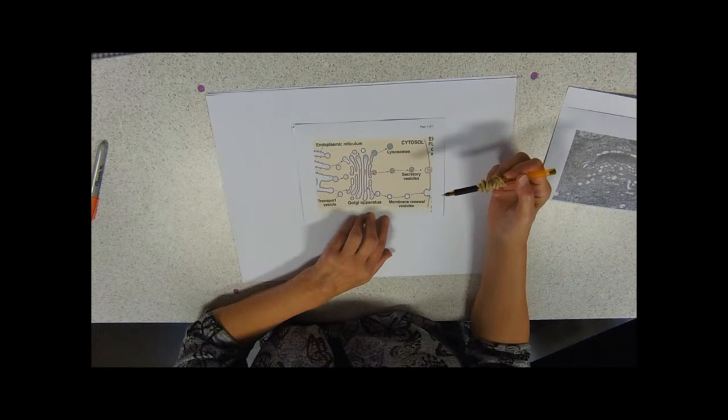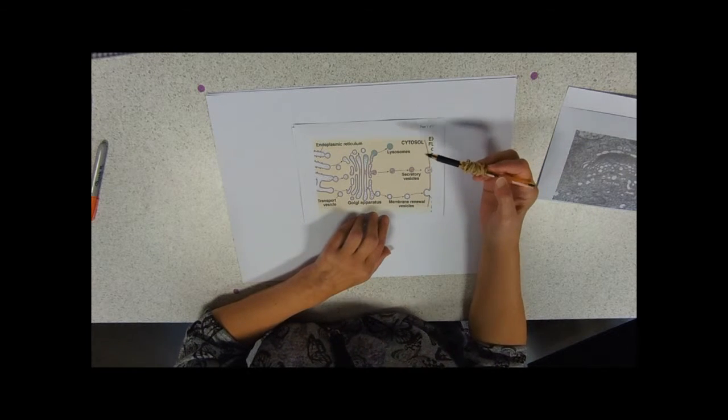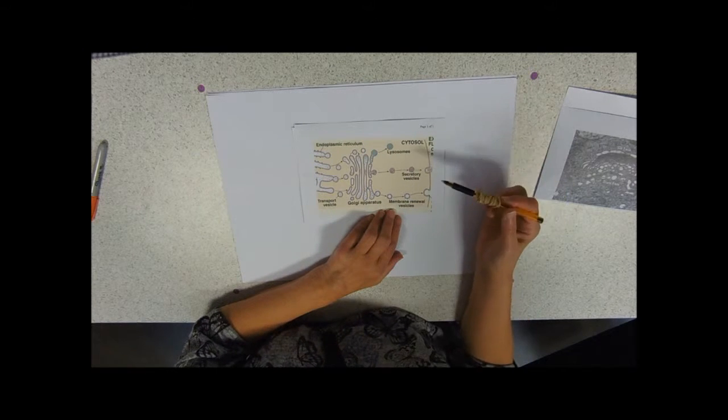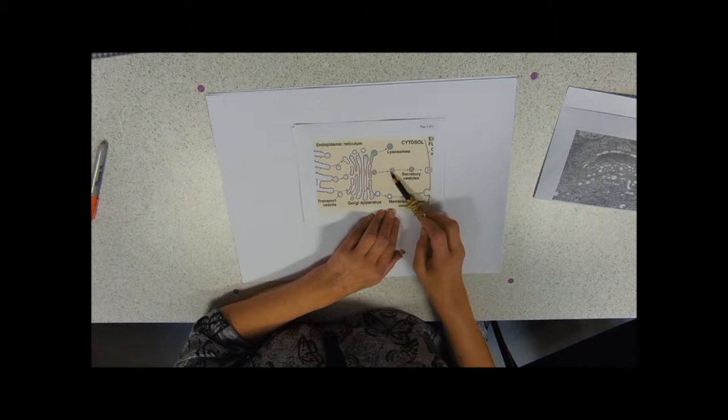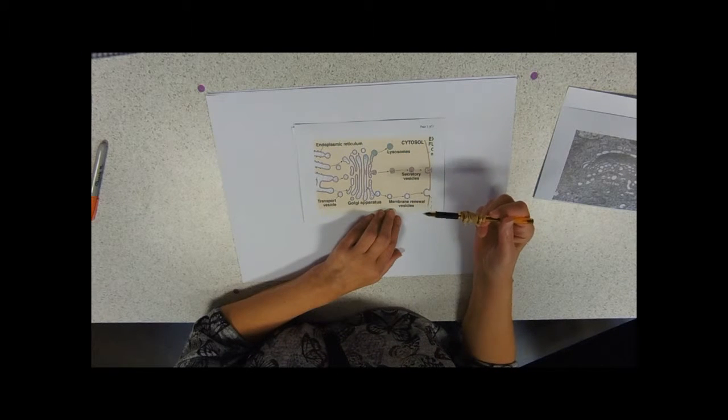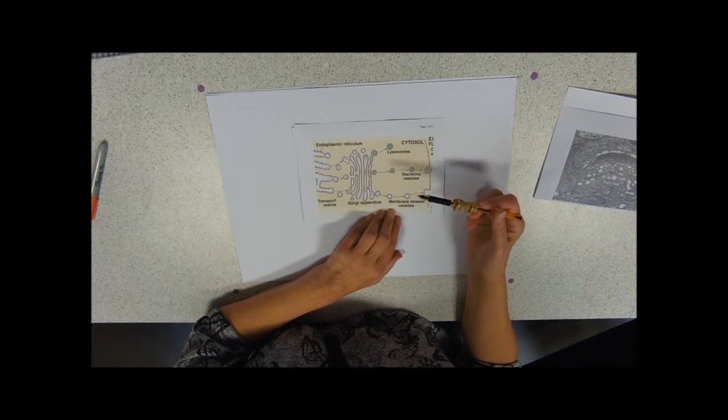The types of vesicles that we have budding off the Golgi body. We'll start with the middle one, secretory vesicles. For example, if this cell was making an enzyme, perhaps.